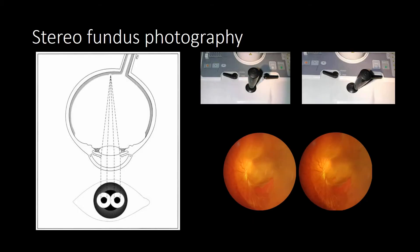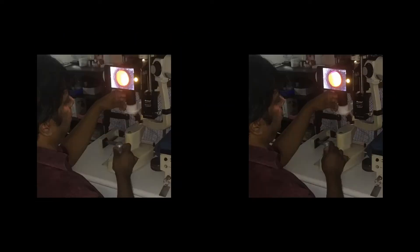Stereophotography involves taking two pictures, slightly offsetting the view as though representing the images as perceived by each eye separately. This is possible with smartphone imaging devices also. It is easier to do stereophotography using the slit lamp mount as seen here.